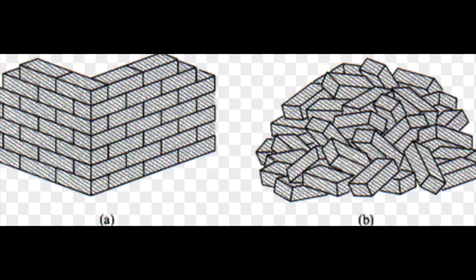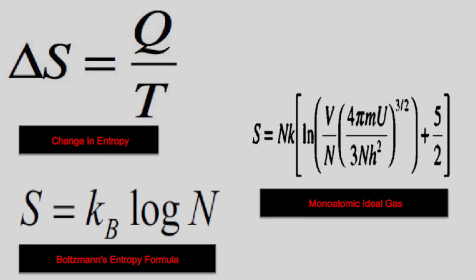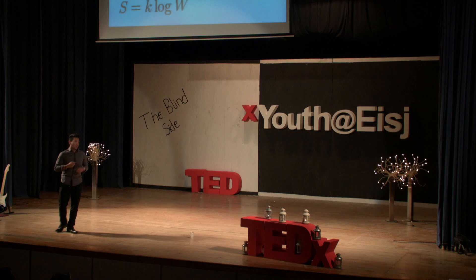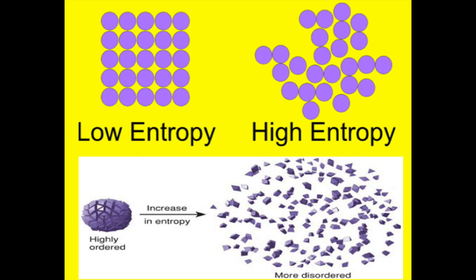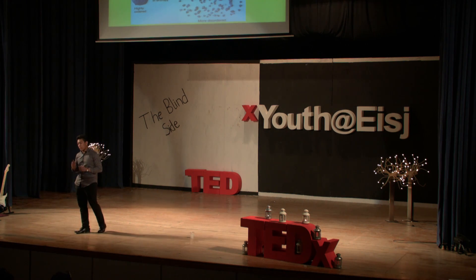But what is entropy? Well, in simple terms, entropy is the quantitative measure of disorder in a system. And in even simpler terms, what the second law of thermodynamics states is that the purely natural tendency of things is to move towards chaos and not order. There are numerous formulas to calculate entropy — for example, this one looks at the change in entropy, this one is known as the Boltzmann formula of entropy, whereas this one looks at the entropy of a monoatomic ideal gas. Now, don't be scared if you don't understand any of this, because frankly, I don't either. So while the quantity of energy in an isolated system is constant, the quality of energy deteriorates over time. As entropy increases, the amount of energy available to perform work decreases.